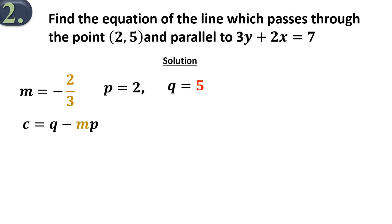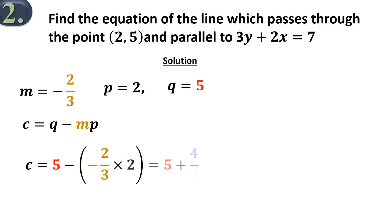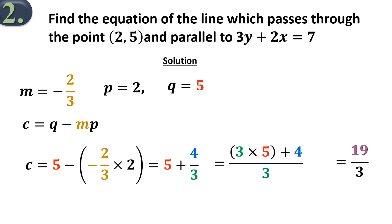Using the formula c equals q minus mp: c equals 5 minus negative 2 over 3 times 2, which will be simplified as shown. In simplifying, you don't have to reduce the fraction. c will be equal to the numerator of the fraction, which is 19 in this case. So our required equation is 3y plus 2x equals 19.